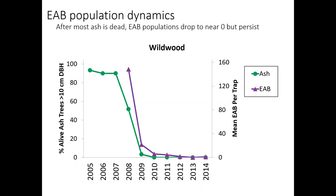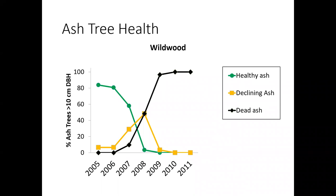Unfortunately, the emerald ash borer population never really goes away. It may look down to zero in some years, but then the next year maybe we'll catch one or two on a trap — so it's at very low densities but remaining in that landscape. Looking at that same site with the data divided into healthy ash in green, declining ash with dead branches in orange, and dead ash in black: at the beginning in 2005, we start with mostly healthy ash; by 2010, it's all dead. But in the middle — 2007 and 2008 — we have a mix of healthy, declining, and dead ash. The trees don't all decline and die at the same rate, and we'll come back to that — it's important in the ash resistance work.